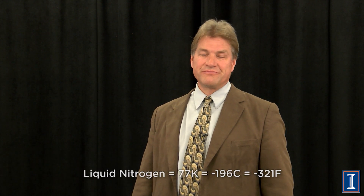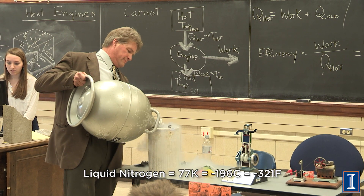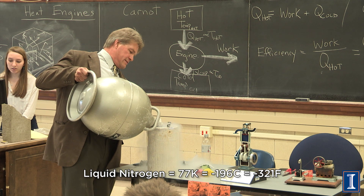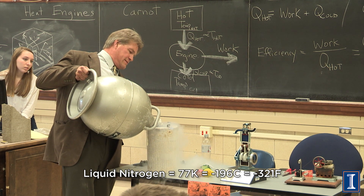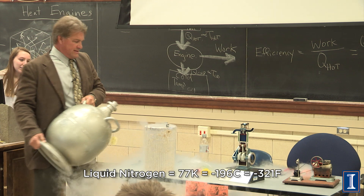We can't get things here in the classroom that are absolute zero, but we can get some things that are very cold, like liquid nitrogen. Liquid nitrogen is at 70 degrees Kelvin — that's really cold. That's the air basically turned into a liquid.